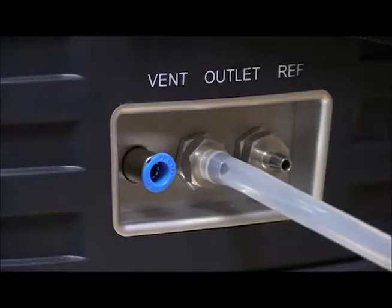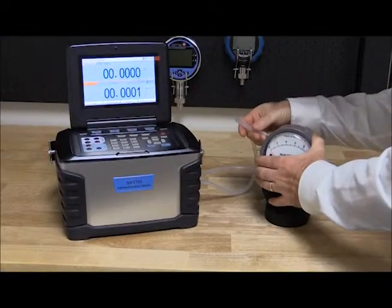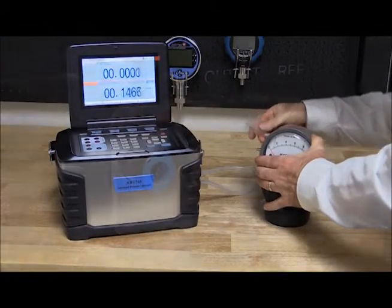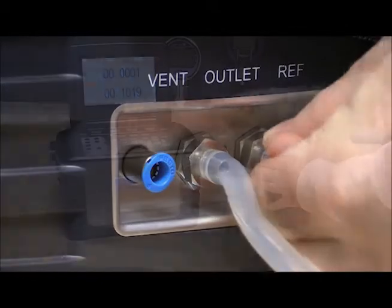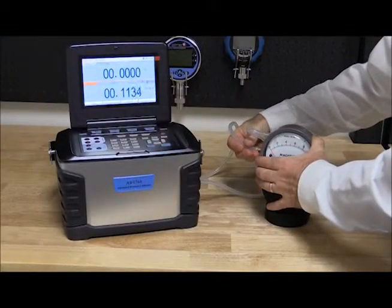The outlet port of the 761 is connected to the high port DUT. Then, the reference port of the 761 is connected to the low port of the gauge.